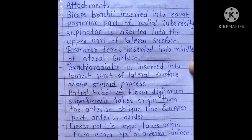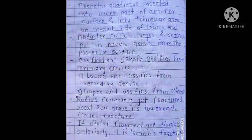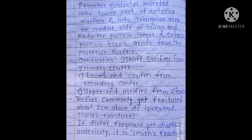The radial head of flexor digitorum superficialis takes origin from the anterior oblique line and the upper part of the anterior border. Flexor pollicis longus takes origin from the upper two-thirds of the anterior surface. Pronator quadratus is inserted into the lower part of the anterior surface and into the triangular area on the medial side of the lower end.